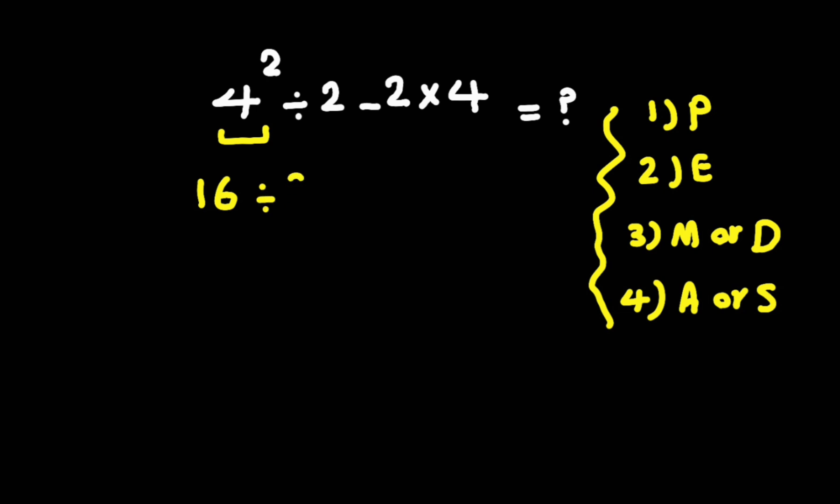Now we have 16 divided by 2 minus 2 times 4. And as we know, multiplication and division have higher priority than this subtraction, and we have to solve from left to right. Now we can start with this division.